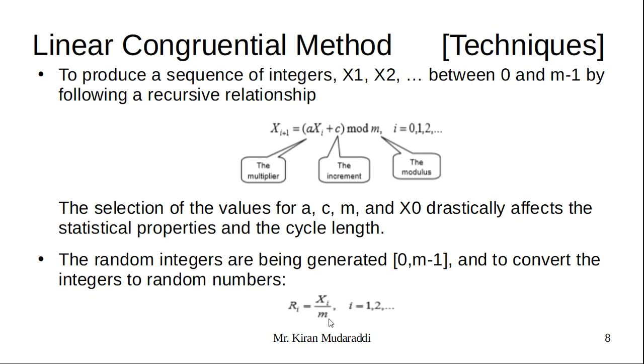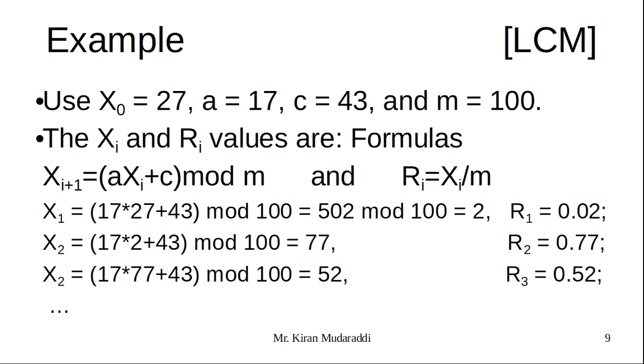Let us take an example. X₀ is called the seed, a is the multiplier, c is the increment, and m is the modulus. Using these two formulas Xi and Ri, we calculate random numbers. X₁ = (a*X₀ + c) mod m. a is 17, X₀ is 27, c is 43, mod 100. When I multiply this, I get 502 mod 100 equals 2. So 2 divided by 100 equals 0.02, which is my first random number. Similarly, we calculate X₂ and X₃.